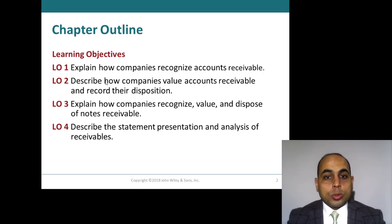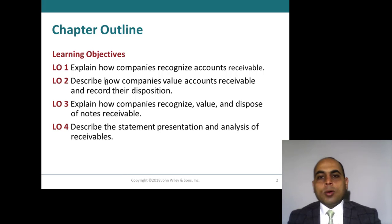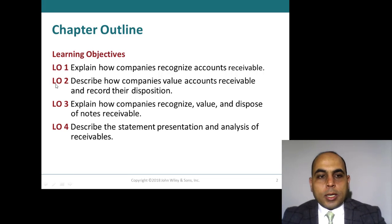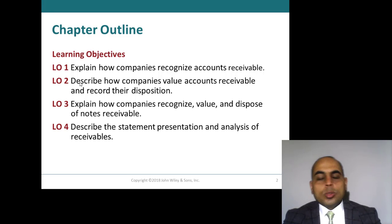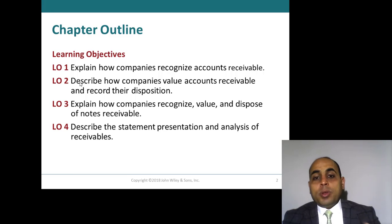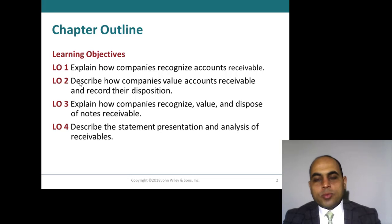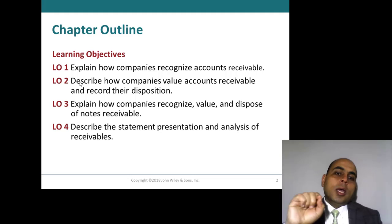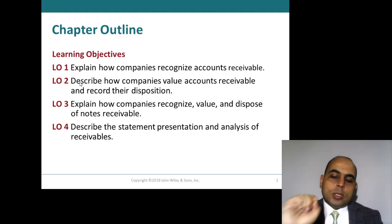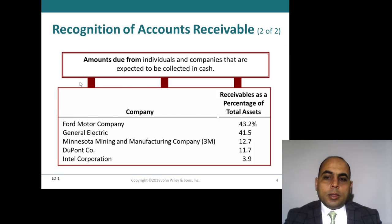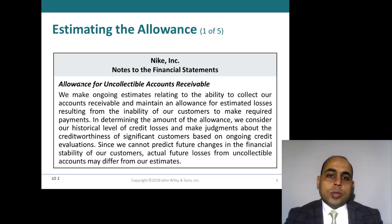We discussed two approaches or two methods: direct write-off and allowance for doubtful accounts. In this video we will continue to discuss learning objective number two — specifically how we calculate the amount of doubtful accounts. Previously we discussed how we record the doubtful amount by the write-off method or the allowance for doubtful accounts method, but the key point is how we calculate the amount itself.